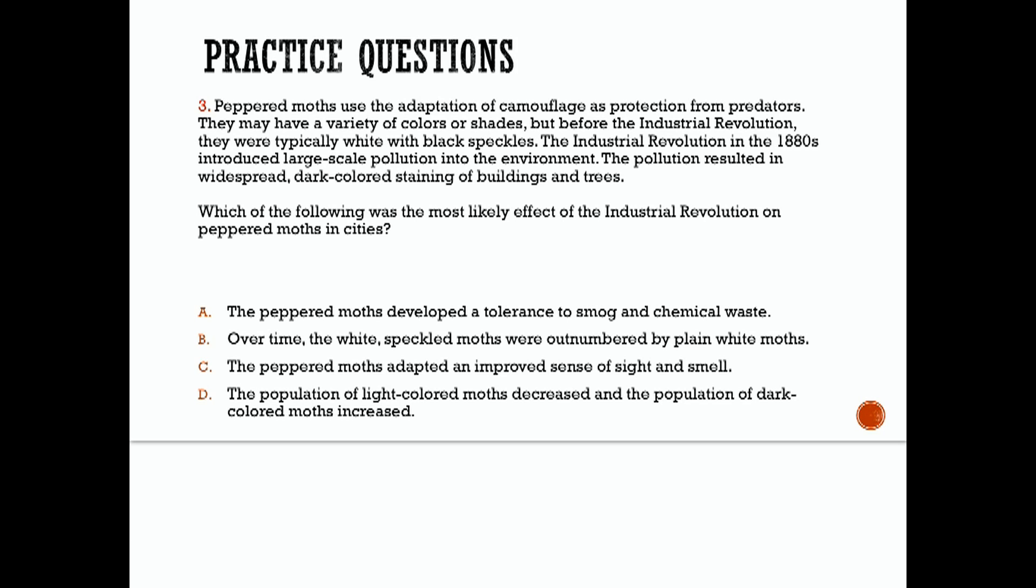Number three, peppered moths use the adaptation of camouflage as protection from predators. They may have a variety of colors or shades, but before the Industrial Revolution, they were typically white with black speckles. The Industrial Revolution in the 1880s introduced large-scale pollution into the environment. The pollution resulted in widespread dark-colored staining of buildings and trees. Which of the following was the most likely effect of the Industrial Revolution on peppered moths in cities?